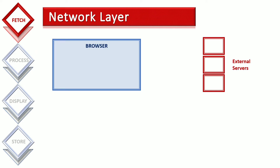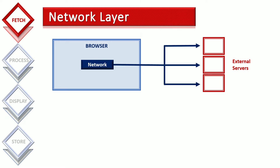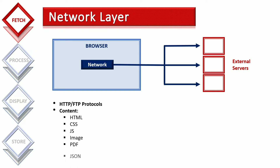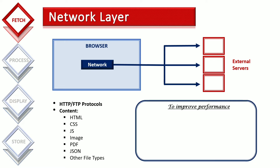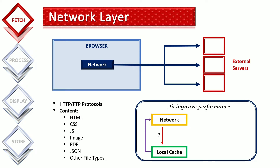The network layer is responsible for fetching data from the server. Any communication between the browser and external servers always goes through the network layer. It uses HTTP or FTP protocols to fetch resources. The response from the server can be any type like HTML, CSS, JavaScript, image, PDF, JSON, or other file types. To improve performance, the network layer will first search for resources in the local cache. If the resource is found in the local cache, it will be fetched from there; otherwise, the network layer will send a new request to the server, get the response, and store it in the local cache for future use.